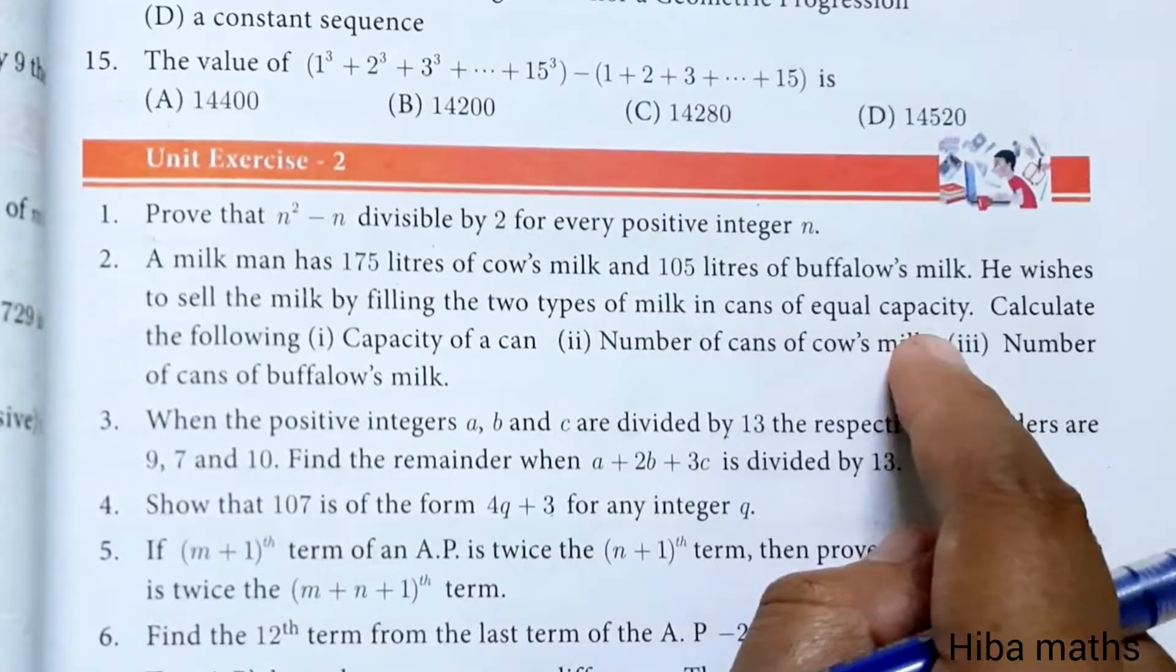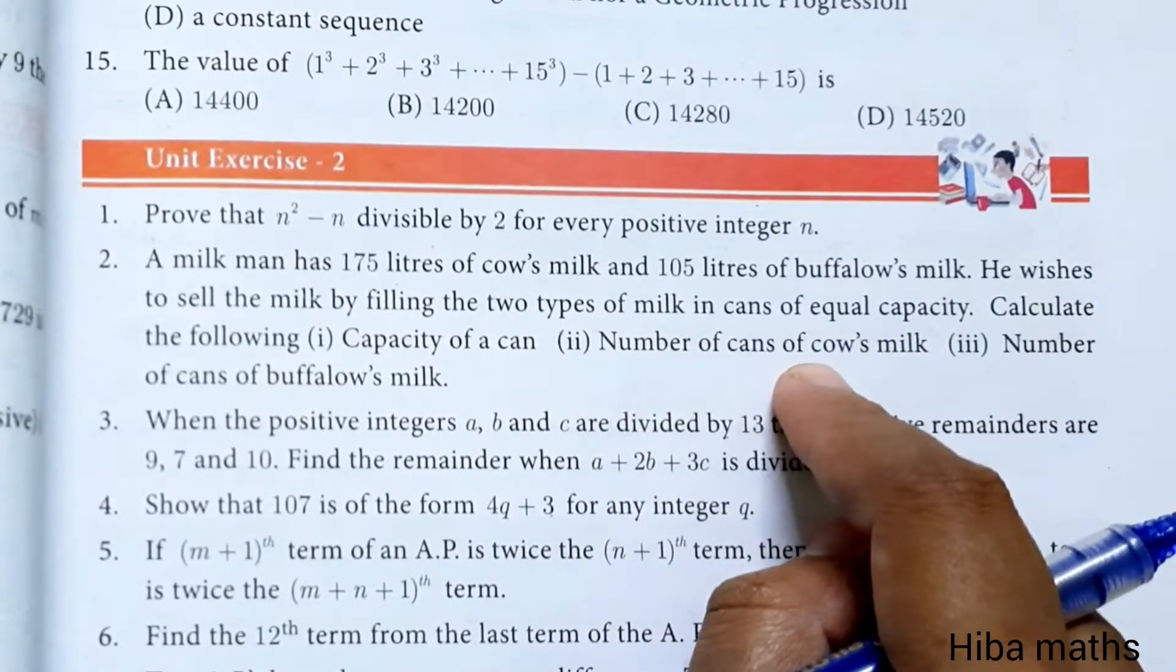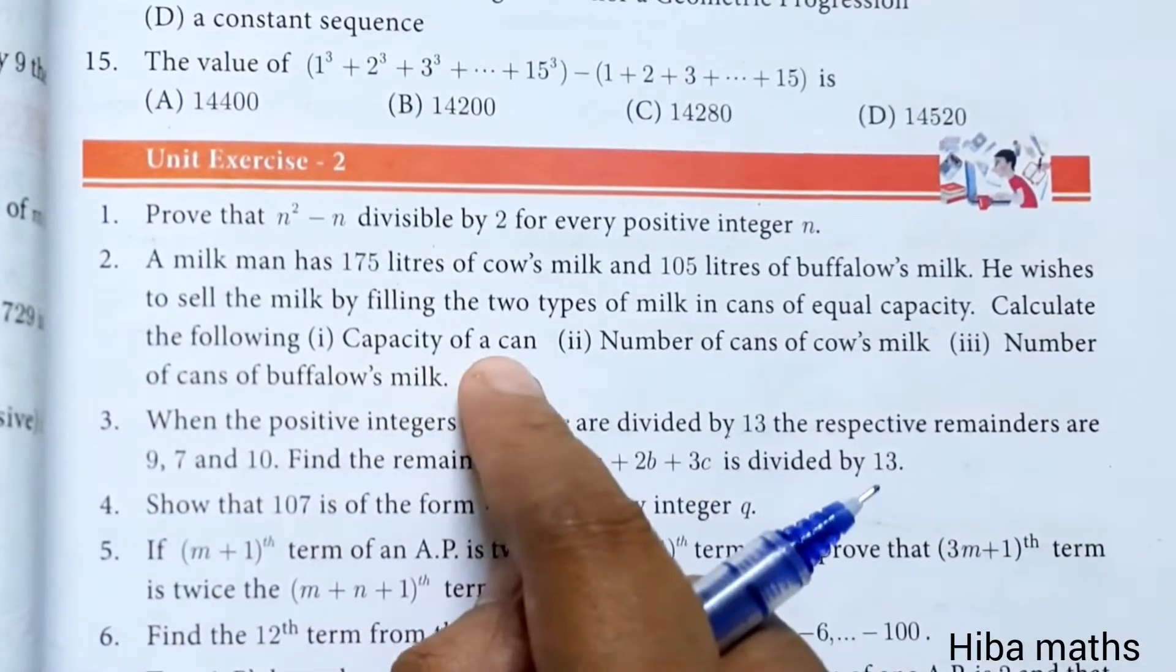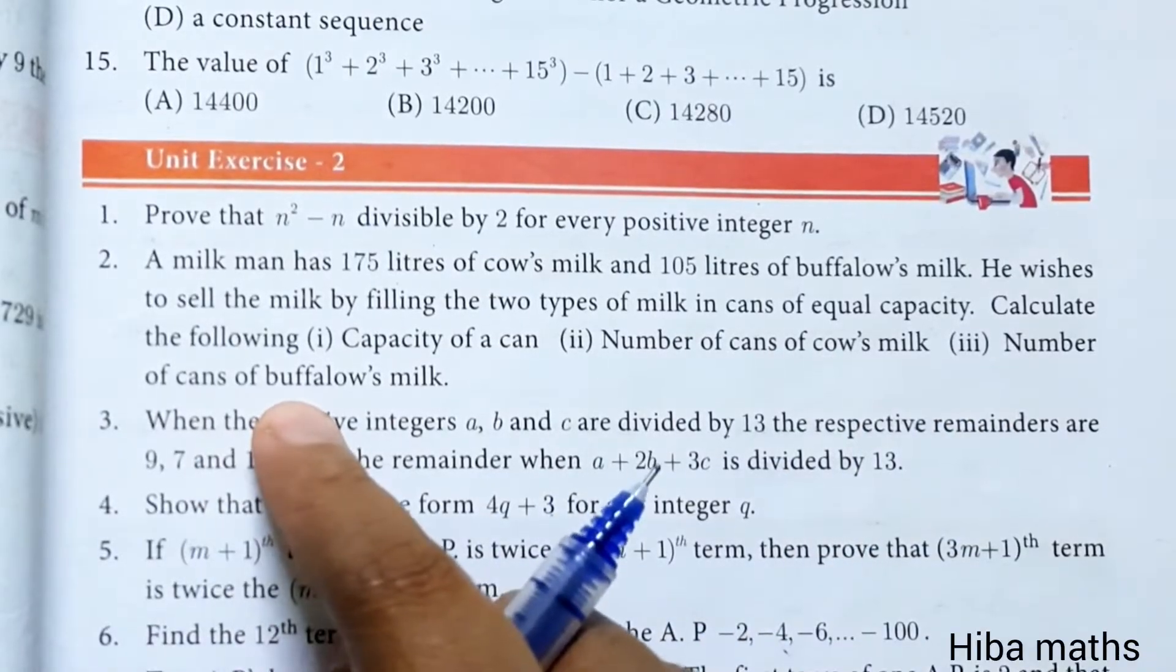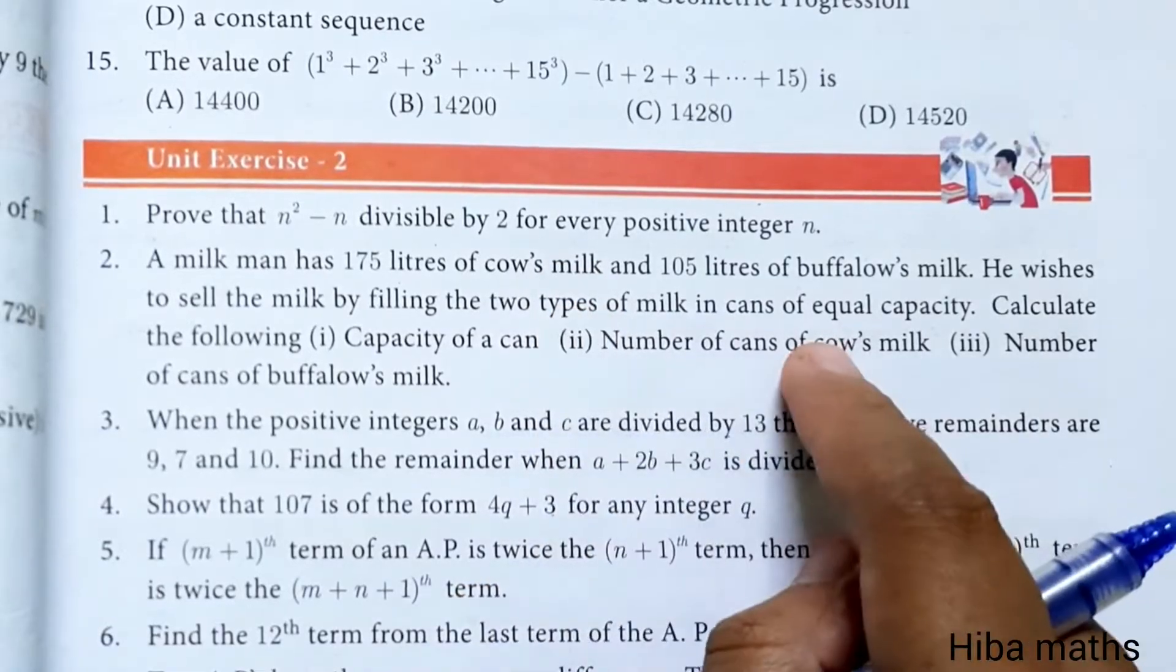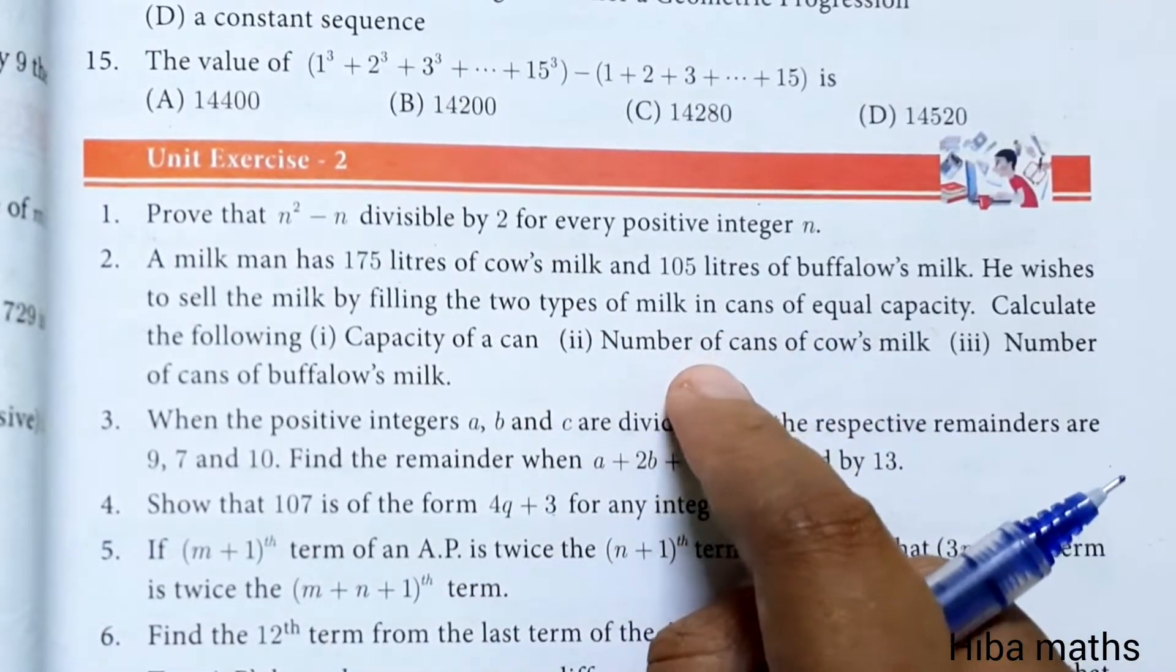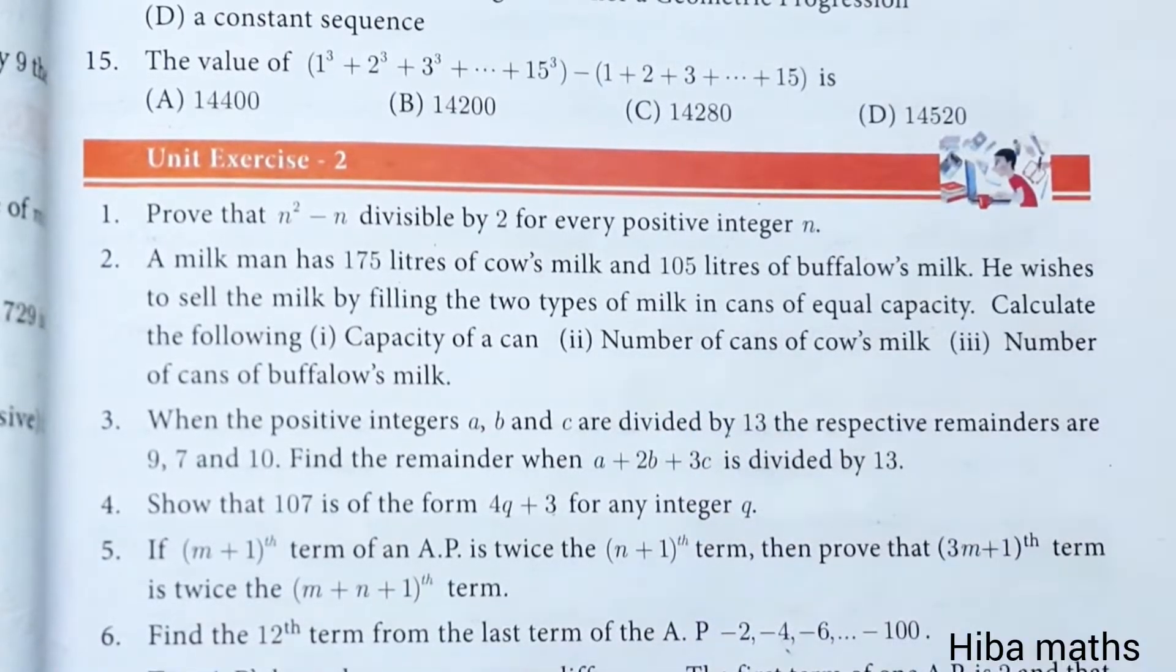For example, 1 liter or 2 liter cans. Calculate the following: (i) capacity of a can, (ii) number of cans of cow's milk, (iii) number of cans of buffalo's milk. For this problem we need to use HCF to find the equal capacity and then calculate the number of cans for cow milk and buffalo milk.